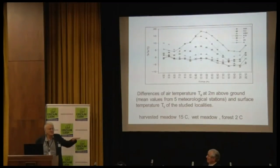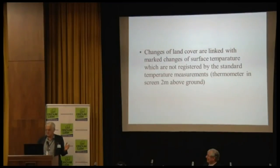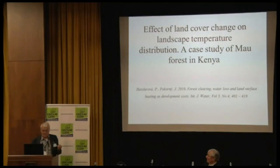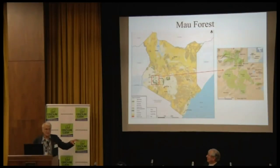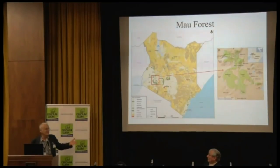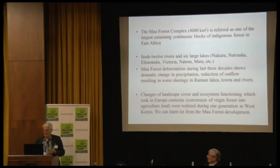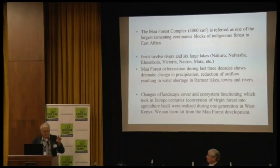Changes of land cover are linked with marked changes of surface temperature that are not registered by standard temperature measurements. In Kenya, about 2,000 square kilometers of forest were removed from the 1990s onward, which we can see in satellite pictures. We cannot evaluate this as easily for Europe because it happened over former centuries and we lack the data. The Mau Forest — 4,000 square kilometers — feeds 12 rivers, and there was dramatic deforestation as population grew and transferred forest to agriculture land.